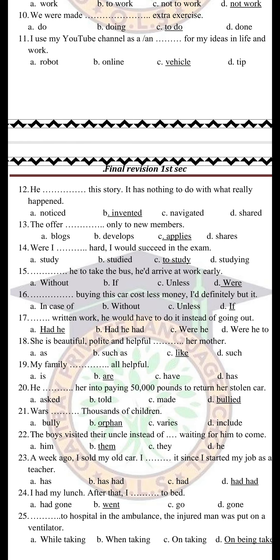Number 20: 'Why he — space — her into paying 50,000 pounds to return her stolen car.' We can't choose 'asked' or 'made' here because we are talking about blackmail. Someone blackmailed a girl to pay him to get her car back. So the right answer is 'bullied.' Bullied here means to force somebody to pay money — to blackmail.